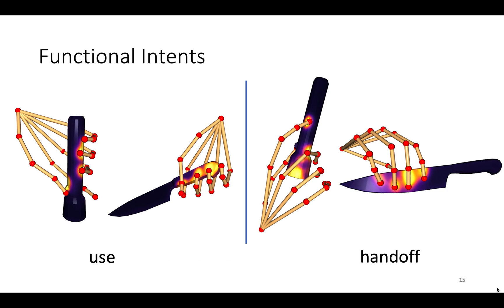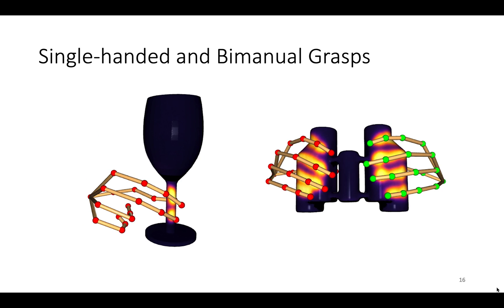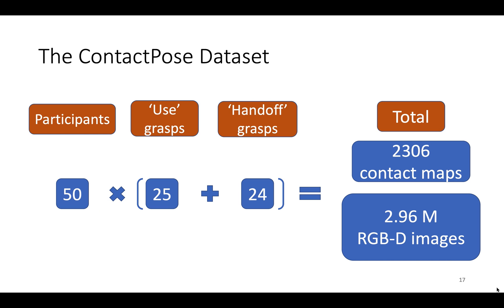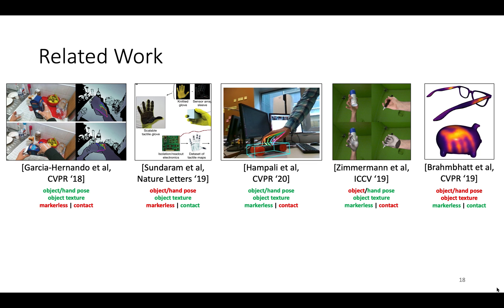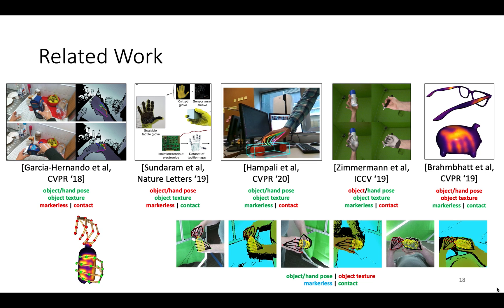ContactPose has grasps with two functional intents, use and handoff, and single-handed as well as bimanual grasps. With 50 participants and 25 objects, it has 2,300 contact maps and almost 3 million RGBD grasp images. In contrast to other hand object datasets, ContactPose offers a unique combination of ground-truth contact, hand and object pose, and almost markerless RGBD images.